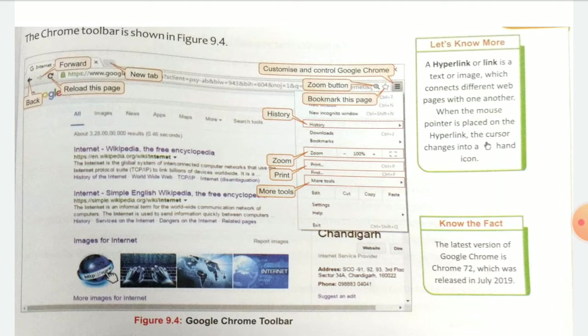You can see the Back button, Forward button, Reload button, and New Tab button. There is also the Customize and Control Google Chrome option, Zoom button, Bookmark this page, History, Print, and More Tools. Here you can see how to navigate these options, including the search bar.